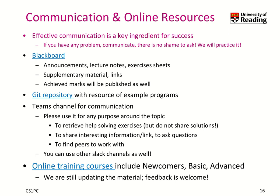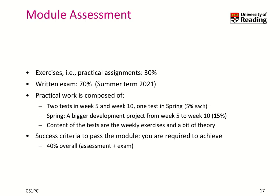The module assessment: I hope most of you are fully awake and paying attention — this is about getting your mark. The 100% of this 20-credit module is distributed into 30% for the practical assignment and 70% in the written exam in the summer term. The practical work is decomposed into two tests — one in week 5, one in week 10, and one test in spring — each worth 5% of the overall 30%, making 15% total. In spring we have a bigger development project from week 5 to week 10, worth the remaining 15%. The content of the test is basically the weekly exercises and some theory from the lecture. To pass, you need 40% overall.